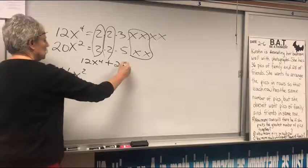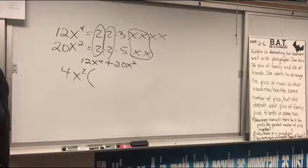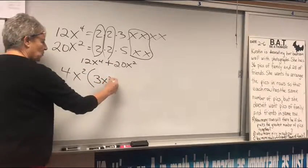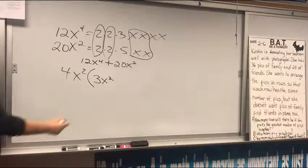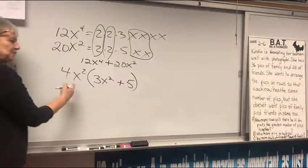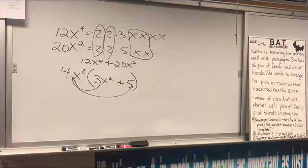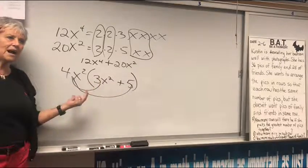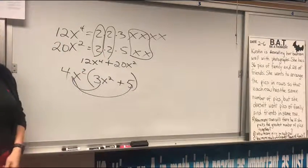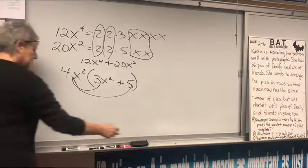12X to the 4th plus 20X squared. You're going to pull out the greatest common factor and do the distributive property backwards. 4X squared times what? 3X squared plus 5. If you do the distributive property, you should get that plus that. You're going to do the distributive property backwards. But if you don't pull out the greatest common factor, none of it's going to be right. You could pull out a 2, but it's not the greatest, so it will not be right.